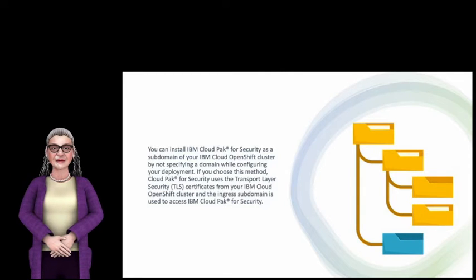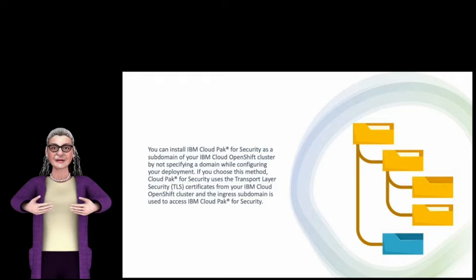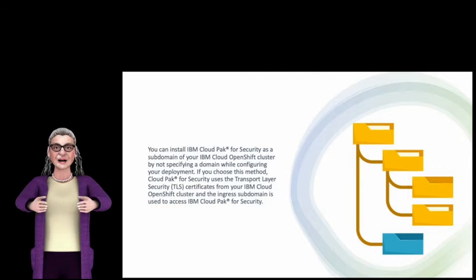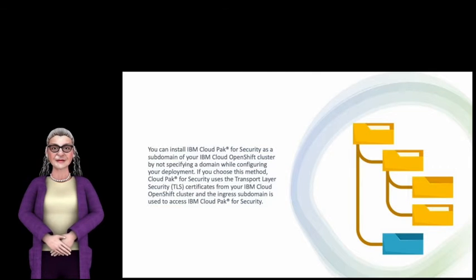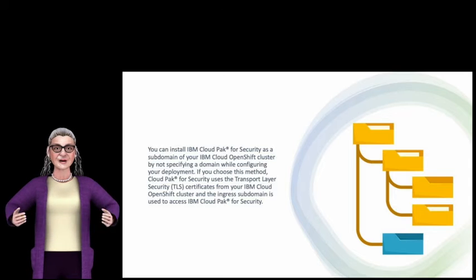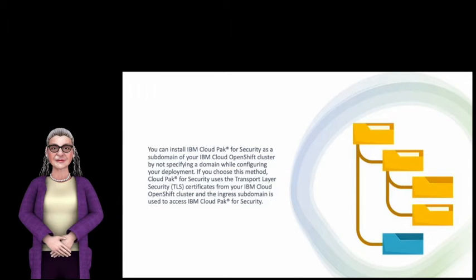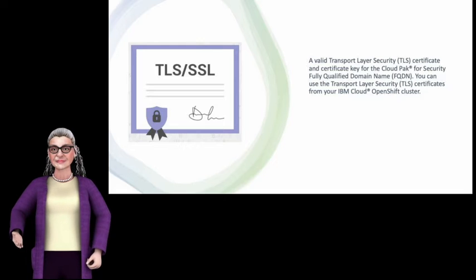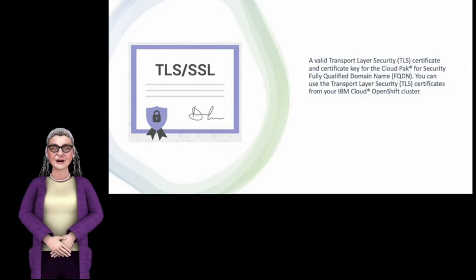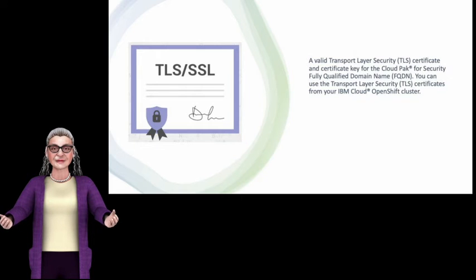If you choose this method, Cloud Pak for Security uses the transport layer security certificates from your IBM Cloud OpenShift cluster, and the ingress subdomain is used to access IBM Cloud Pak for Security. A valid transport layer security (TLS) certificate and certificate key for the Cloud Pak for Security fully qualified domain name (FQDN) is required.